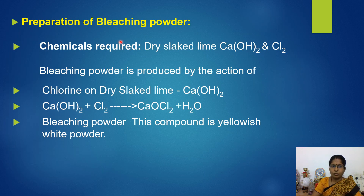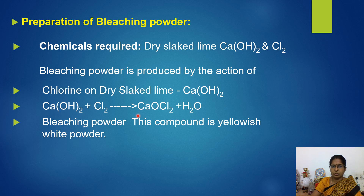Now let's move on to the preparation of bleaching powder. The chemicals required are dry slaked lime Ca(OH)2 and Cl2 (chlorine). Bleaching powder is produced by the action of chlorine gas on dry slaked lime. When chlorine gas reacts with calcium hydroxide, it forms bleaching powder and water is released: Ca(OH)2 plus Cl2 gives rise to CaOCl2 plus H2O. Here CaOCl2 is calcium oxychloride, whose general name is bleaching powder.